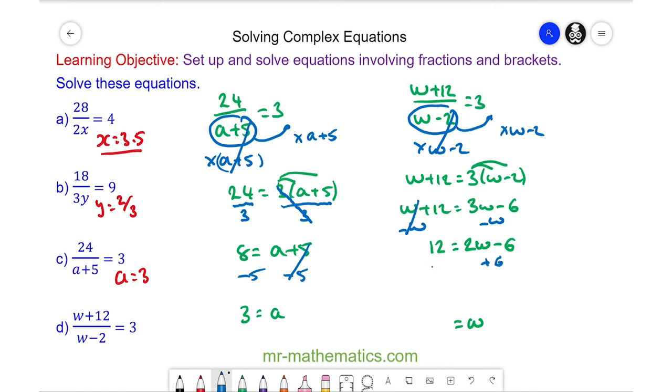We can add 6 to both sides and these will cancel. So we have 12 plus 6 which is 18 which is 2w. Finally, we will divide both sides by 2 and these will cancel. So w will equal 9.